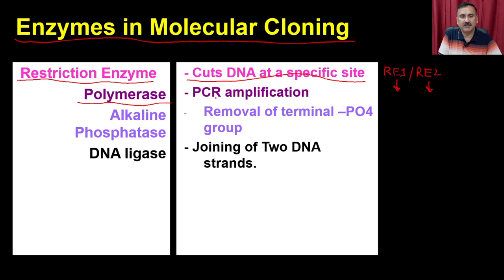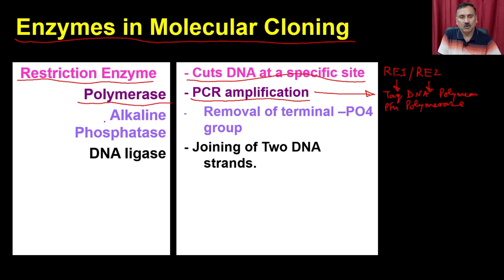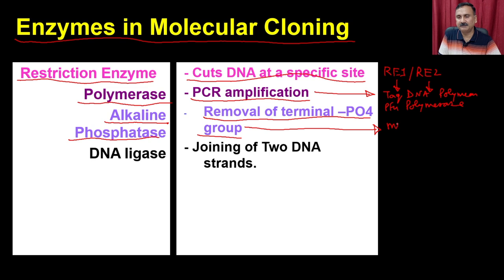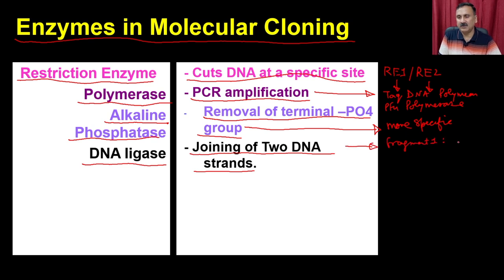We can also use polymerase for PCR amplifications — we discussed Taq DNA polymerase and Pfu polymerase for amplifying gene fragments. Alkaline phosphatase is used to remove the terminal phosphate group, making ligation more specific. DNA ligase joins two DNA fragments: fragment 1 is the amplified gene product and fragment 2 is the cut plasmid. Let us start first with the restriction enzymes.